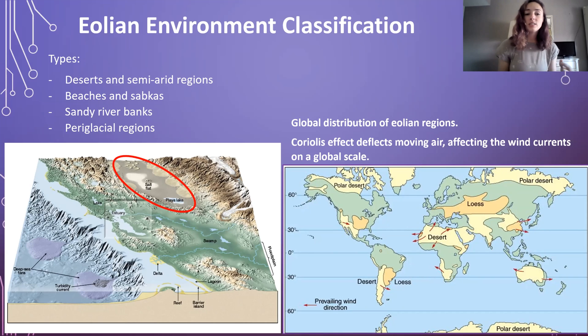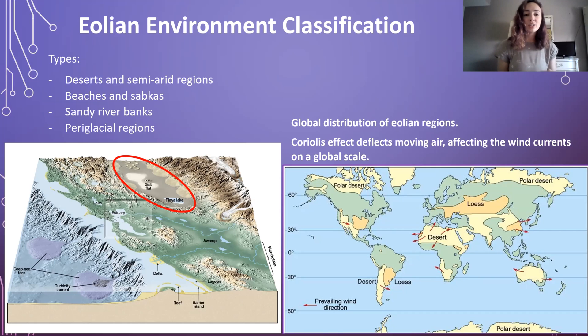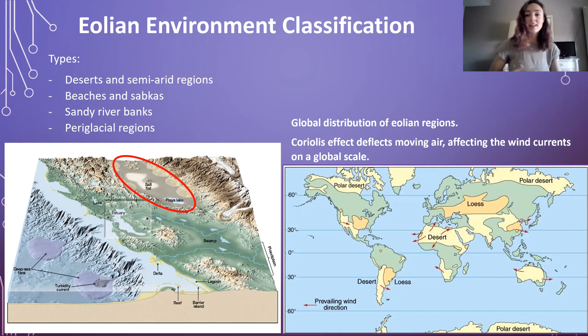To the bottom left here, we have a figure showing where desert environments can commonly occur, which is adjacent to environments such as salt flats, playa lakes, mountain regions, alluvial environments, etc.